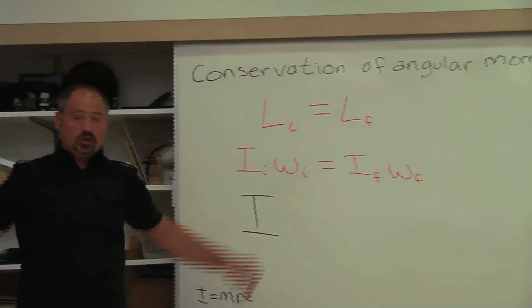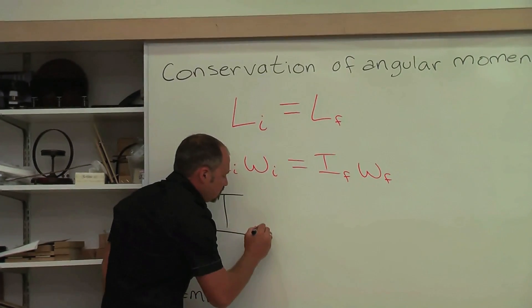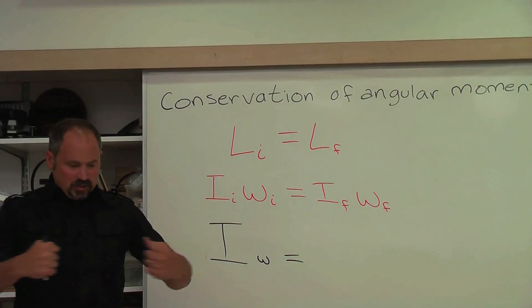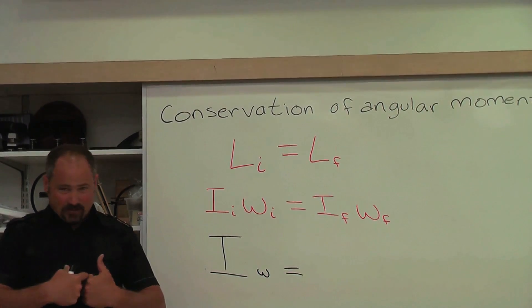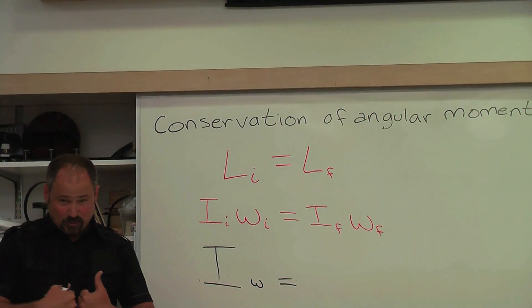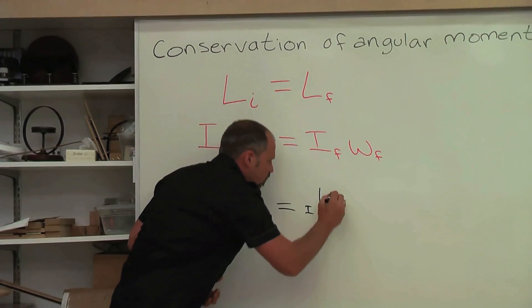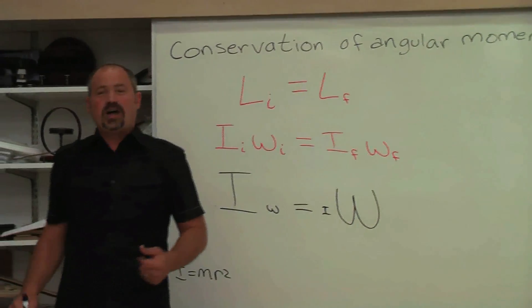she had a large moment of inertia to start with, and therefore a small angular velocity. But then she brought her arms in, so now the mass is at a very small distance from the rotation axis, and therefore her moment of inertia was small, and therefore she had a large angular velocity.